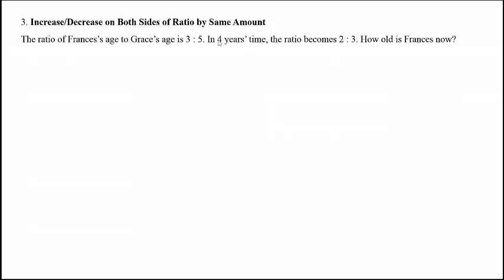So when it comes to age questions, in 4 years time, it means that when Francis grows by 4 years, Grace will also grow old by 4 years. So that's right, the increase in the amount is the same.